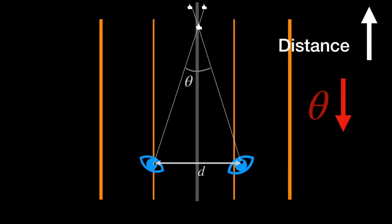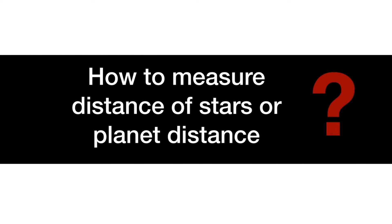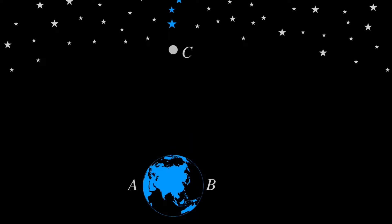This relationship helps us measure the distances of stars or planets. Now let's see, using the parallax method, how to measure the distance of a star or planet. Here you see two diametrically opposite points on the earth, A and B. C is a planet for which we need to find the distance from the earth. A and B are two observation locations, similar to our left and right eye.